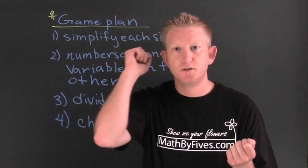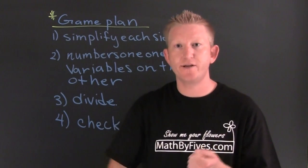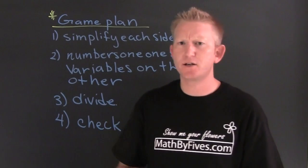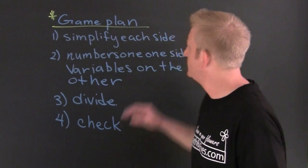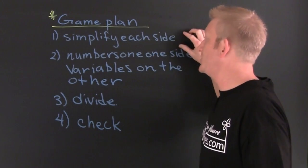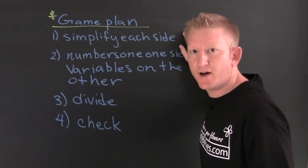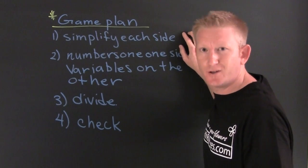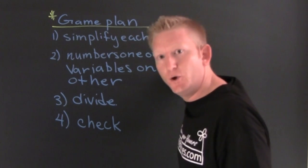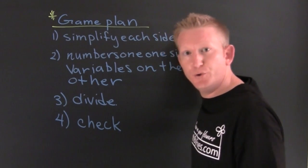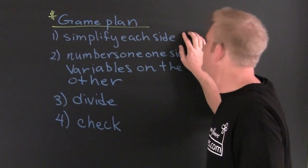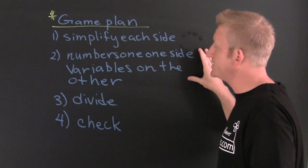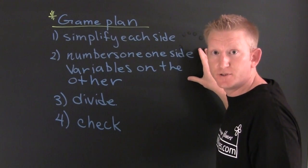When solving these linear equations, we need a game plan. Here's our game plan. First, we're going to simplify each side — gather, collect, combine and stuff of that nature. Then we need numbers on one side and variables on the other.